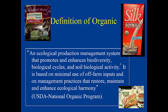What exactly is organic? According to the USDA National Organic Program, organic is an ecological production management system that promotes and enhances biodiversity, biological cycles, and soil biological activity. It's based on minimum use of farm inputs and management practices that restore, maintain, and enhance ecological harmony.